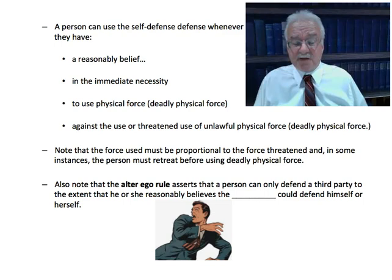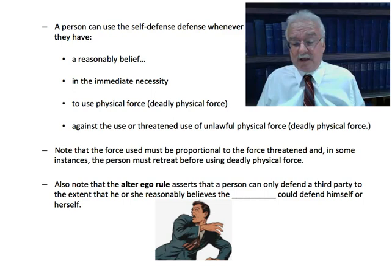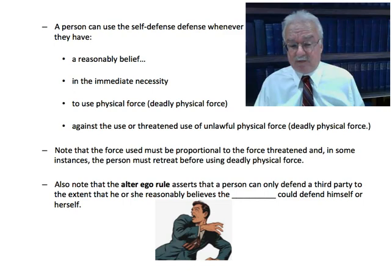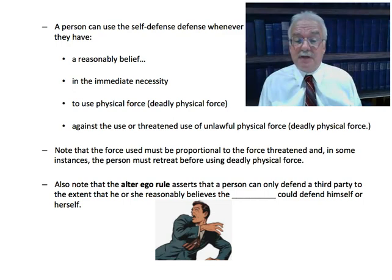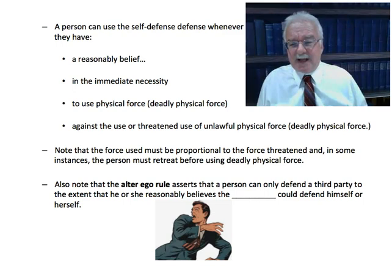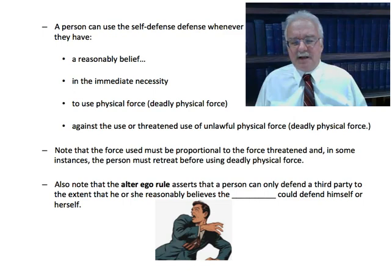Also note that the alter ego rule asserts that a person can only defend a third party to the extent that he or she reasonably believes the third party could defend himself or herself. Now I'd like to go into some detail about the elements of this self-defense defense. The first part is you have to have a reasonable belief. An important word here is belief — the law is not concerned with the actuality of the situation. For example, if a person points an inoperable gun or a model gun at somebody and says, 'I'm going to kill you,'